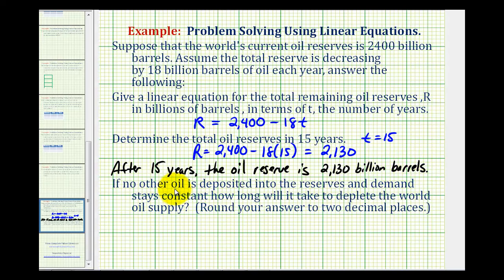And for the last question, it says if no other oil is deposited into the reserves and demand stays constant, how long will it take to deplete the world's oil supply? Well, if the oil supply is depleted, that means the number of barrels in reserve would be zero. So they're telling us to solve for t when R is equal to zero.